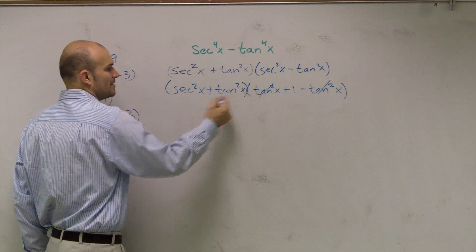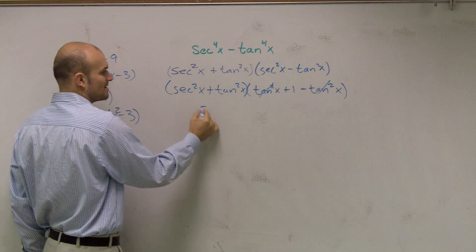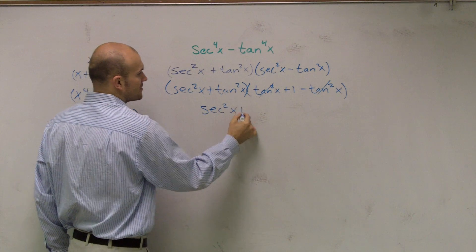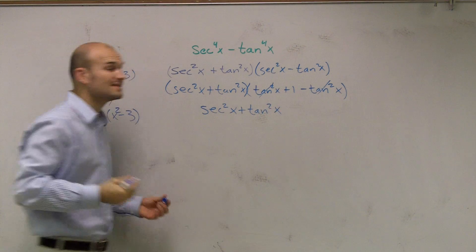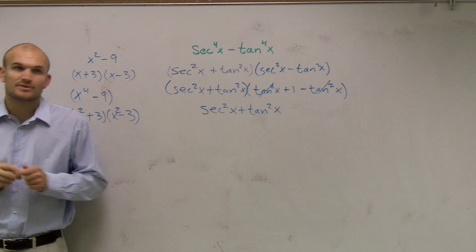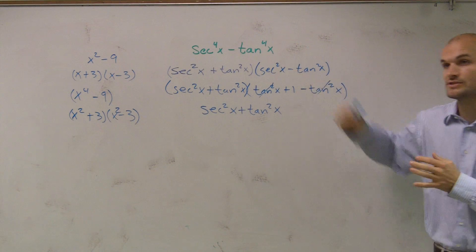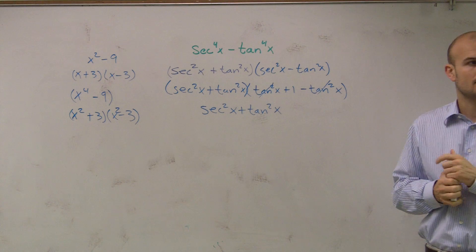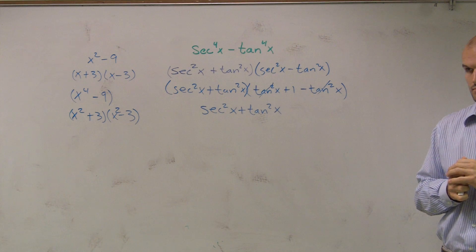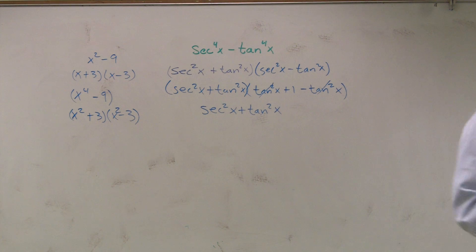And therefore I'm just left with 1 times that. So my final answer, secant squared of x plus tangent squared of x. Like I said, this isn't the only way to simplify it, but this is just one method to simplify this problem by using difference of two squares to cancel it out. Got it? Any other questions on this?